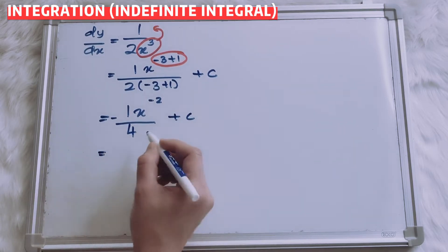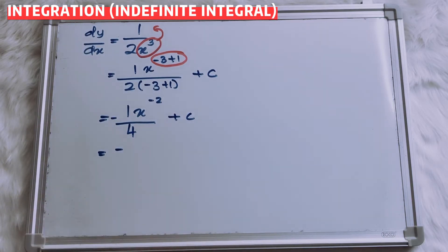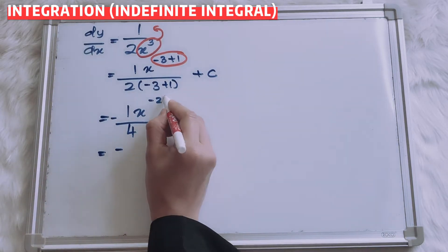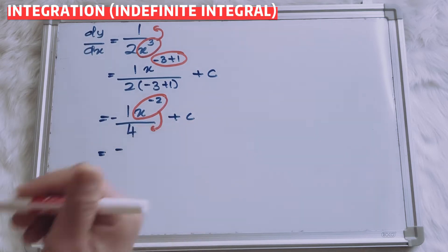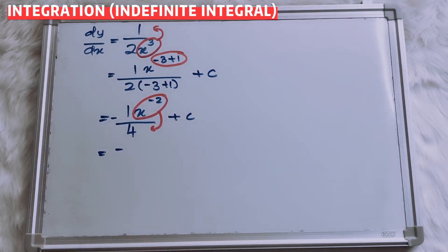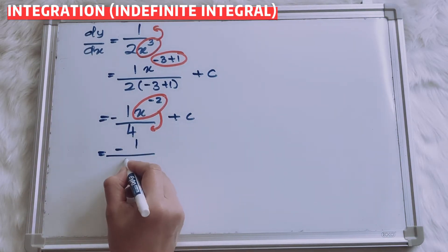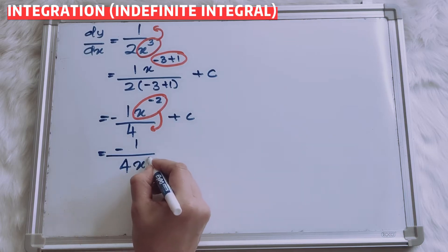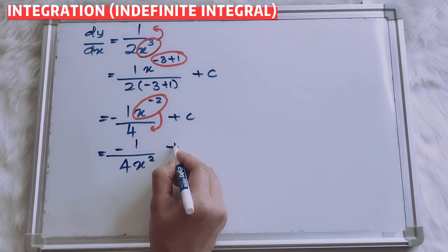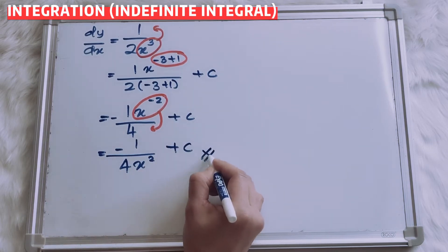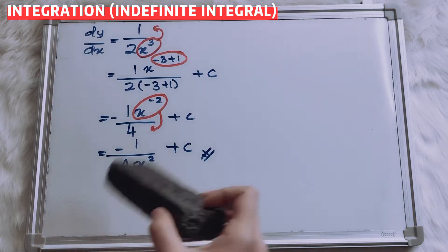So now, bring back x to the bottom. You will have 1 over 4x squared, plus C. Okay, alright.